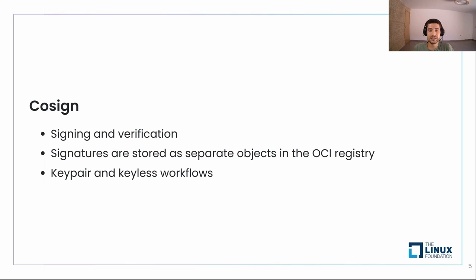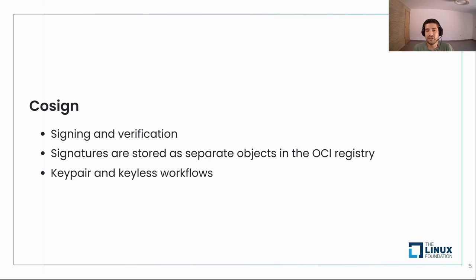There are two ways of signing with Sigstore. We have the traditional keypair way, where you need a keypair that you can bring your own or generate with Cosign. Then you need the private key alongside its password for signing, and you need to distribute the public key for verification. And then we have the keyless mode, which doesn't involve using any key at all — it uses OIDC for authentication. We will see examples for both of them.